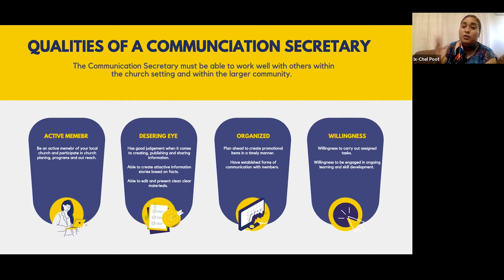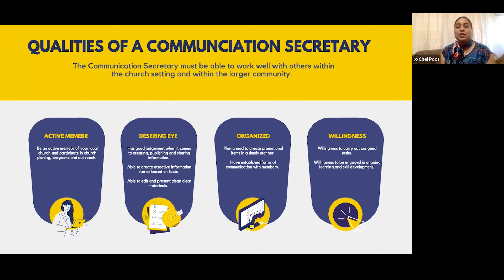The communications secretary needs to have a discerning eye and very good judgment when it comes to creating, publishing, and sharing information — be able to create attractive information, stories, and facts, and be able to edit and present clear materials. Also very important is that the communications secretary needs to know what information can be shared publicly and what information it is best to pull back from sharing. Not everything that happens needs to be in the public eye, so there has to be a very careful look at how we are presenting information.